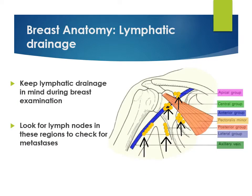The slides also cover lymph nodes, which are essential when talking about breast cancer. There are several slides on lymph node drainage for breast tissue. Some lymph nodes drain into the apical group or the central group, and there are axillary veins. These are the areas we palpate when examining for breast cancer, so pay close attention to this in the slides.